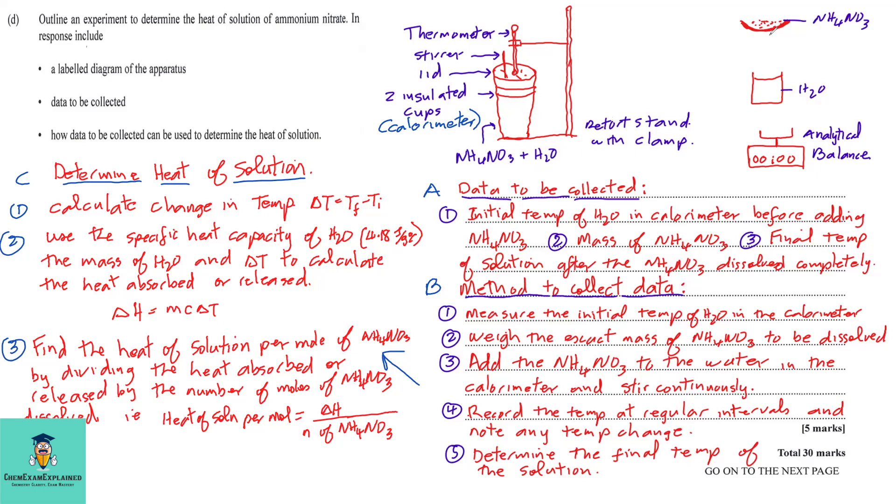So, the other apparatus that we would need is a container to hold the ammonium nitrate, a beaker to hold our water, and of course, the analytical balance to measure the mass of the ammonium nitrate. So, we just looked at the first part which is the diagram of the apparatus.